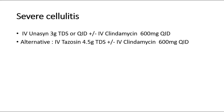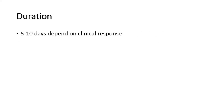For severe cellulitis, we give IV Unasyn 3 grams three or four times per day, with or without IV Clindamycin. The alternative is IV Tazocin with or without IV Clindamycin. The duration of treatment is usually 5 to 10 days depending on the clinical response of the patient. That's all for this video, thank you.